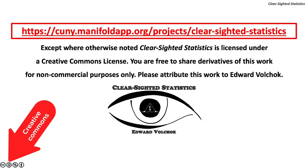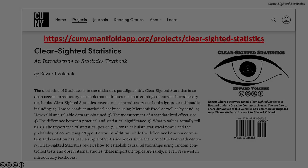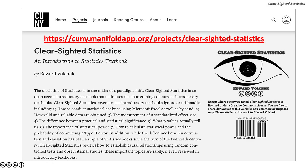Except where otherwise noted, Clear Sighted Statistics is licensed under a Creative Commons license. You are free to share derivatives of this work for non-commercial purposes only. Please attribute this work to Edward Volchak. You can access Clear Sighted Statistics for free, along with its Excel and PowerPoint files, on the CUNY Commons.